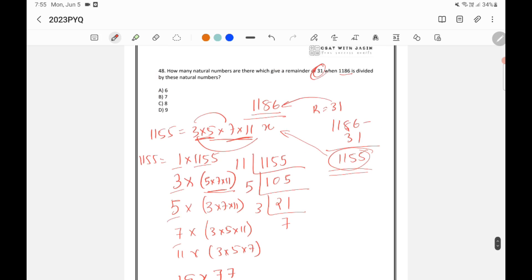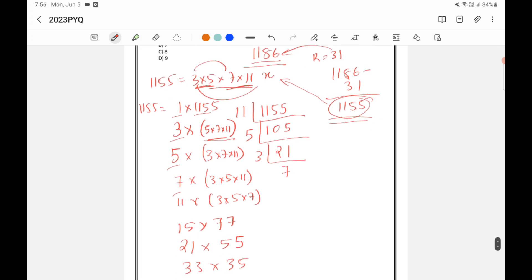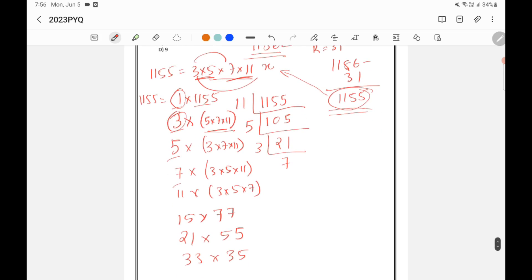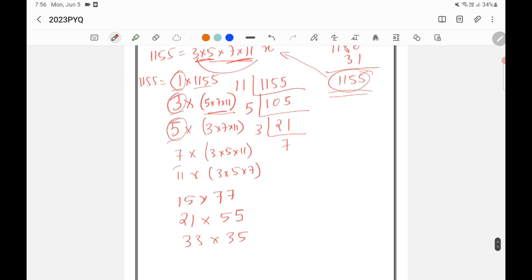But here you need to check one more thing. Here the remainder is 31. Remainder cannot go more than the divisor. Whenever we are doing a division, the remainder will always be less than the divisor. So here 1 will not come because 1 is less than 31. 3 will not come, 5 will not come. All these factors will not come. So how many will come? 33 is coming, this will come, this will come.